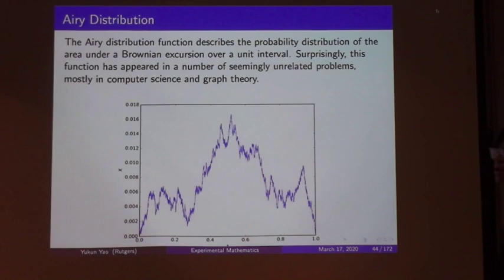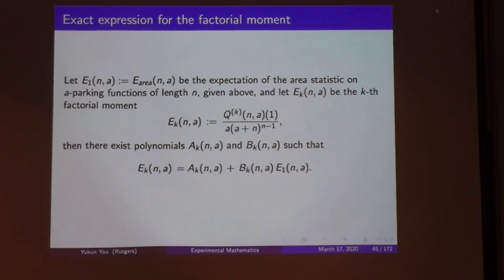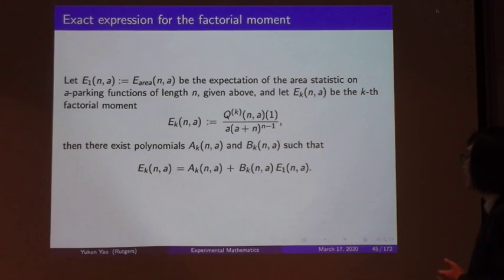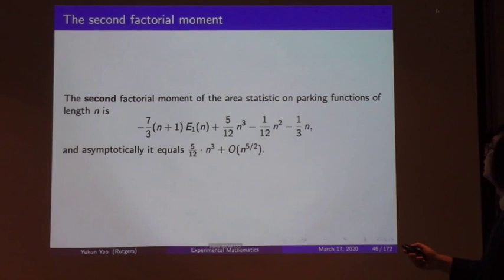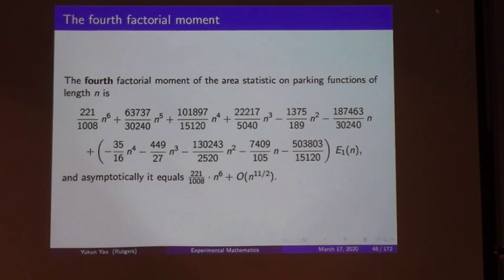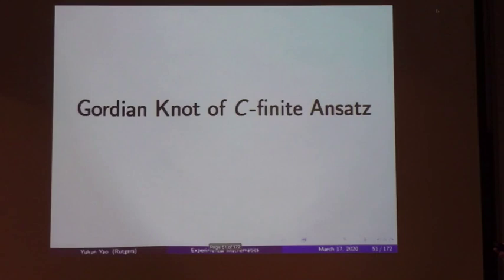We also consider exact expressions for the factorial moments. We express the factorial moments in terms of polynomials A_k(n,a) and B_k(n,a), where the k-th factorial moment equals A_k(n,a) + B_k(n,a) times the expectation. We computed results for the second through sixth factorial moments.